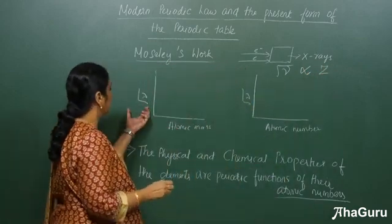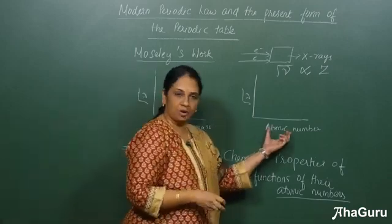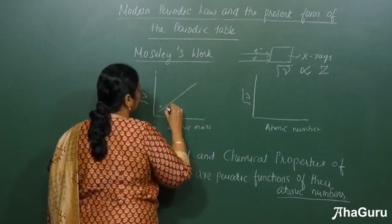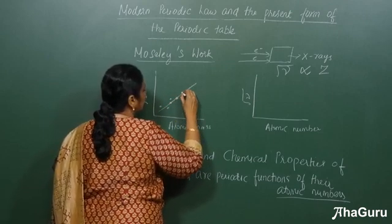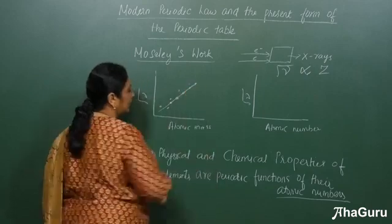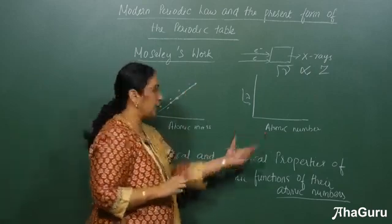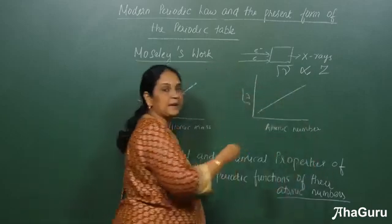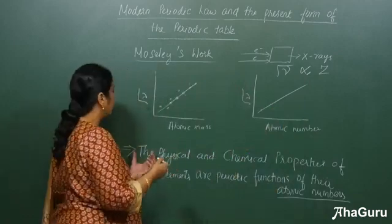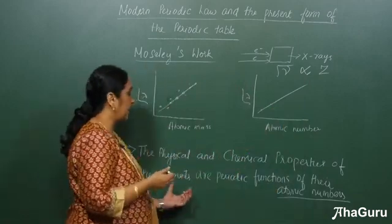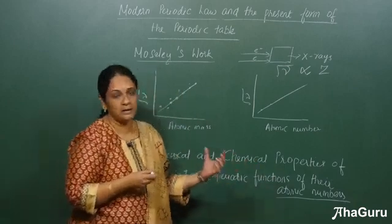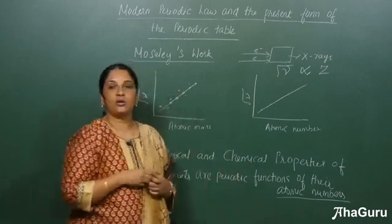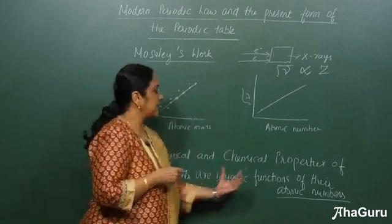When he plotted the frequency versus atomic mass and with atomic number, with atomic mass he could not get a straight line — there were some deviations, and some elements were getting deviated as per increasing atomic mass. But with atomic number, he got a straight line. So he changed Mendeleev's periodic law: the physical and chemical properties of the elements are periodic functions of their atomic number, because Mendeleev had stated it with increasing atomic weight, but the modern periodic table is with increasing atomic numbers.